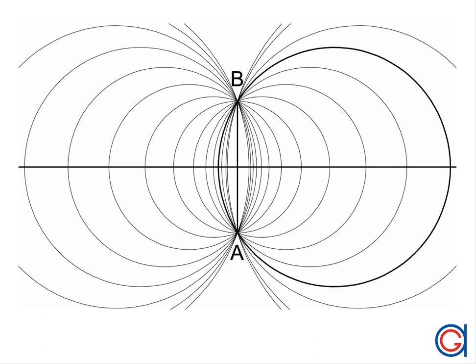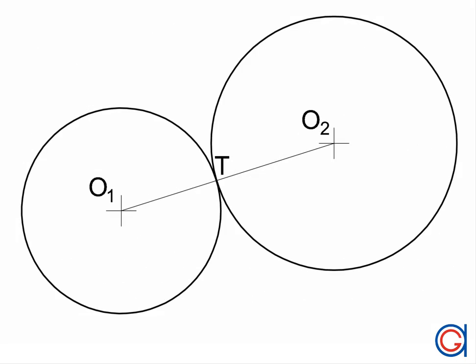The first law states that the center of every arc which passes through points A and B must always be located on the perpendicular bisector of the line segment AB. The second law states that for two circles to be tangential, their center points must be aligned with their tangent point.